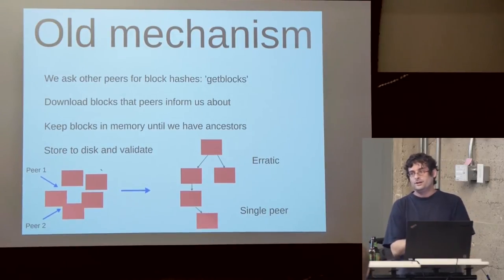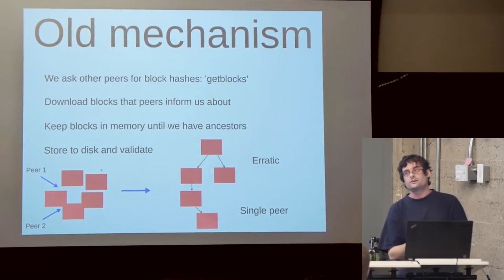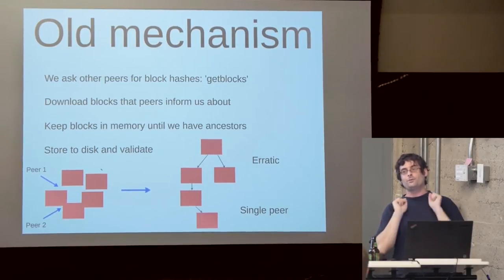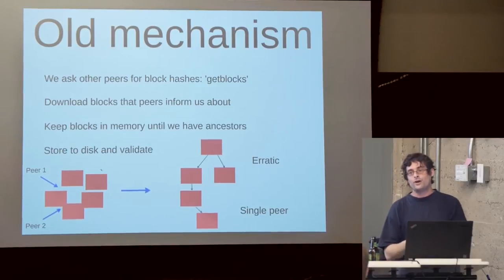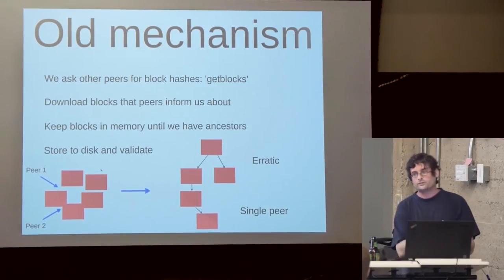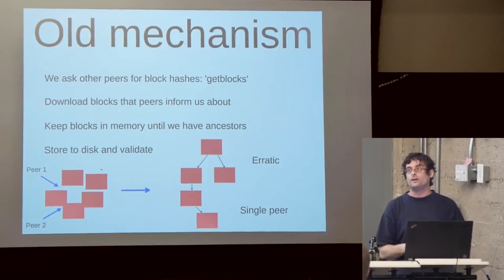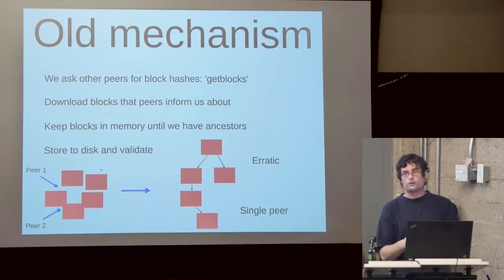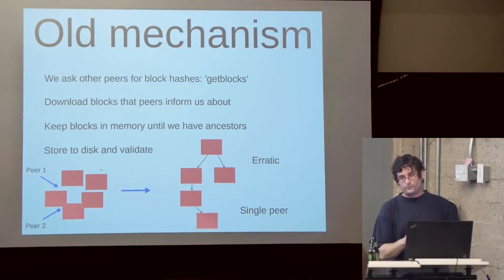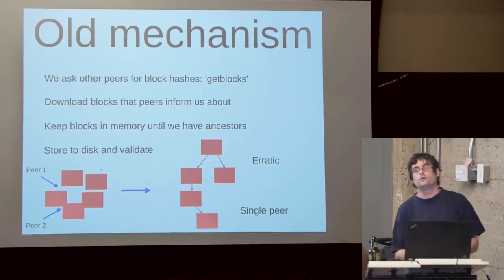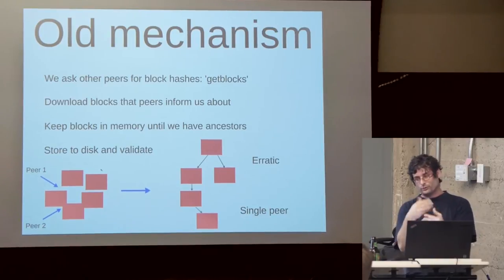The reason we kept blocks in memory is we can't validate them, so we don't want to give an attacker the ability to connect to you and flood you with blocks you just store on disk. This was an increasingly erratic process — as downloading took longer, it got more confused by nodes announcing new blocks. In practice it was only downloading from a single peer because you can't download what you don't know about yet.